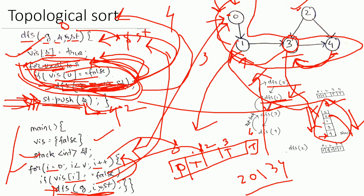Control returns to the main function as no adjacent vertices remain for vertex 2. The loop increments to 3 — already visited — then to 4 — also already visited. We have visited and explored all vertices, so at last we print the stack. For a graph there can be more than one topological sort available. This is all about topological sort.